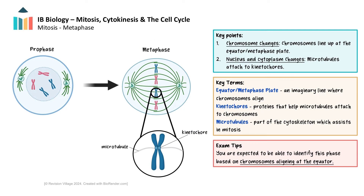Metaphase is the second stage of mitosis following prophase. During metaphase, chromosomes, which have already condensed and are highly visible, align along the metaphase plate. This plate is an imaginary plane located equidistant from the two poles of the cell — not a physical structure, but rather a region where chromosomes line up. Each chromosome's centromere lies at the metaphase plate, and sister chromatids are arranged on either side, ensuring they will be pulled to opposite poles during the next phase. Spindle fibres, specifically kinetochore microtubules, attach to the centromeres of each chromosome with the help of proteins called kinetochores. Each sister chromatid is attached to microtubules from opposite spindle poles. You can recognize metaphase by the alignment of chromosomes along the metaphase plate.